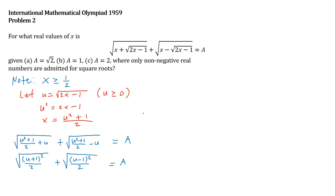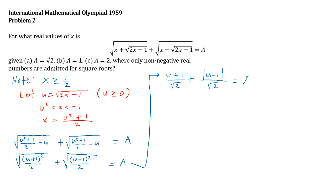Let us simplify further. Since u is greater than or equal to zero, u plus 1 is positive, so we get (u + 1) divided by the square root of 2 for the first term. However, we need to be careful with the second term because u minus 1 changes sign at u equals 1. So that reduces to the absolute value of (u − 1) divided by the square root of 2, and the sum equals a. We need to split the interval u ≥ 0 into two subintervals to simplify this last equation.